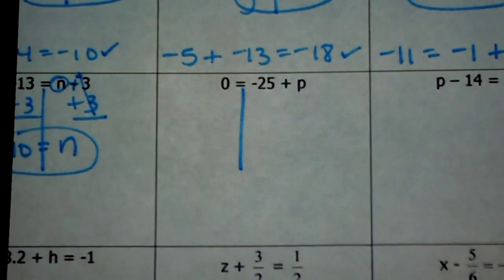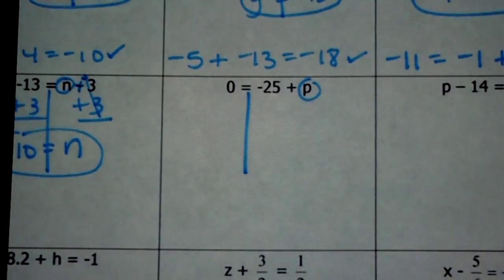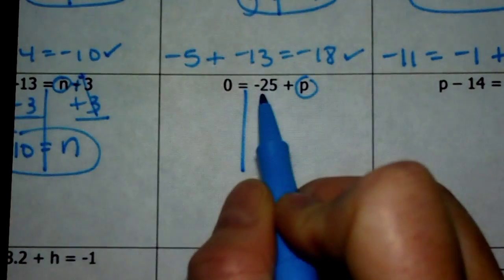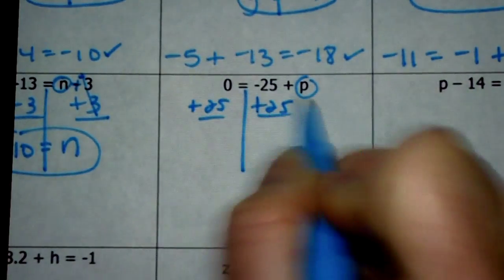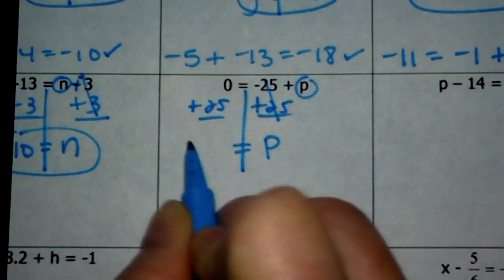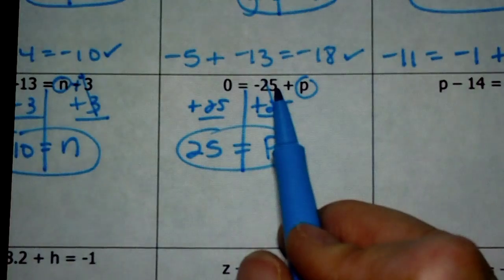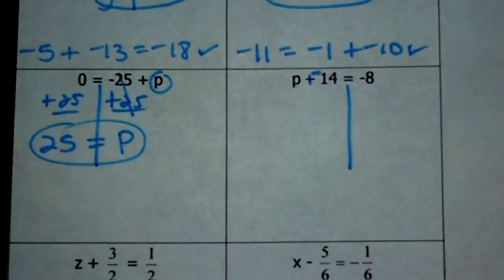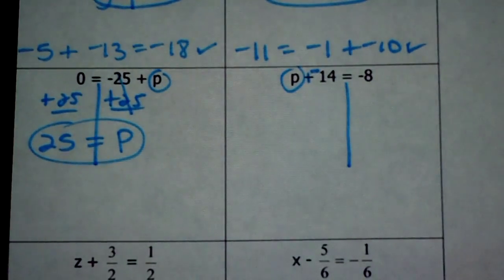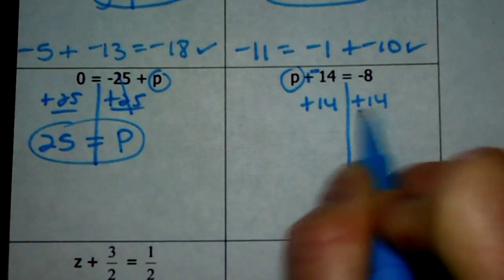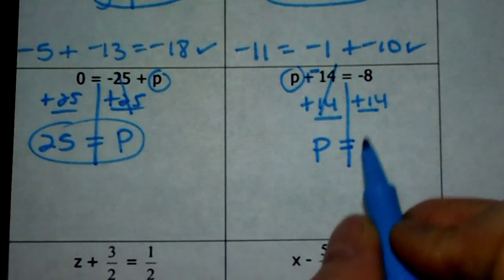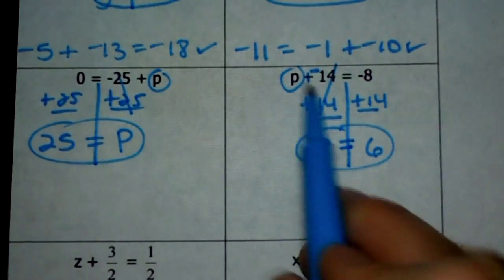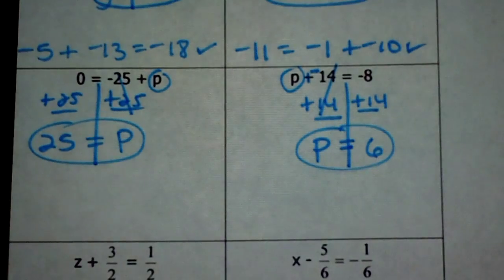Next one: draw my line. There are no signs to change. Here's p — we need to get p alone. I want to get rid of negative 25 because it's on the same side as p. So I'm going to add 25 because negative 25 plus positive 25 equals 0, and 0 plus p is p. To check: is negative 25 plus positive 25 equal to 0? You betcha. Next: draw my line, change the sign. Here's p. Negative 14 is being added to p, so to isolate p, add 14 to both sides. Negative 14 plus 14 is 0; p plus 0 is p. Negative 8 plus 14: subtract, take the sign of the greater — p is 6. Check: is 6 plus negative 14 equal to negative 8? Yes.